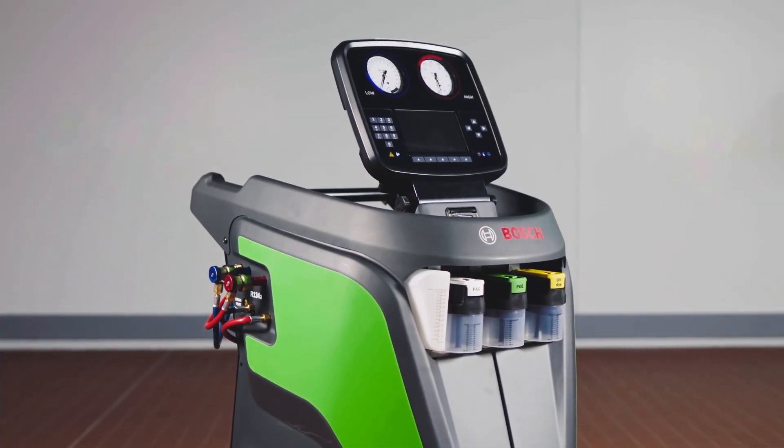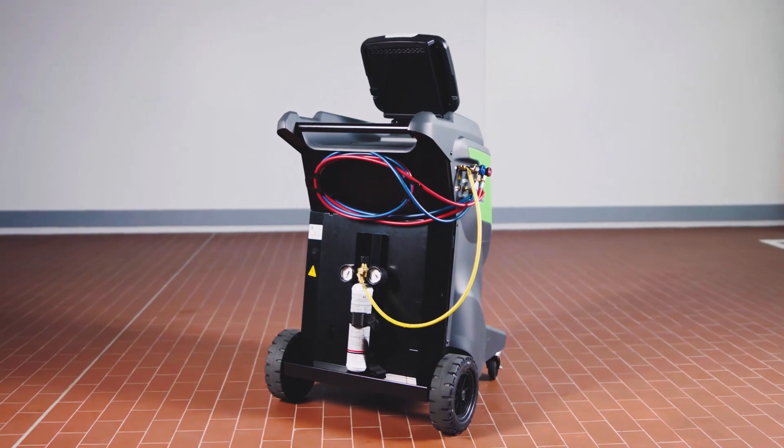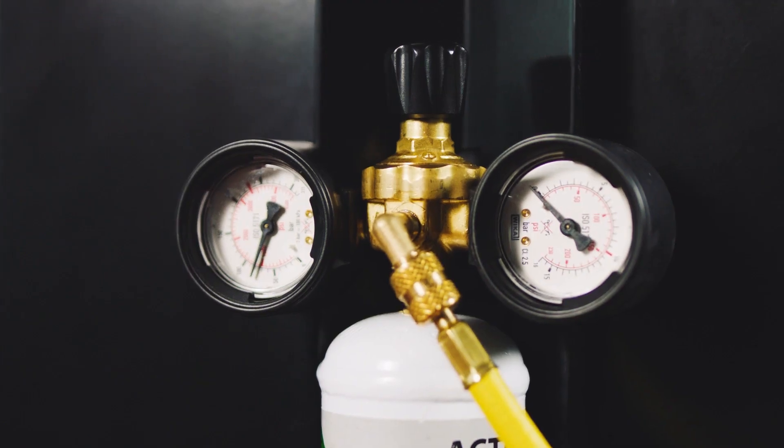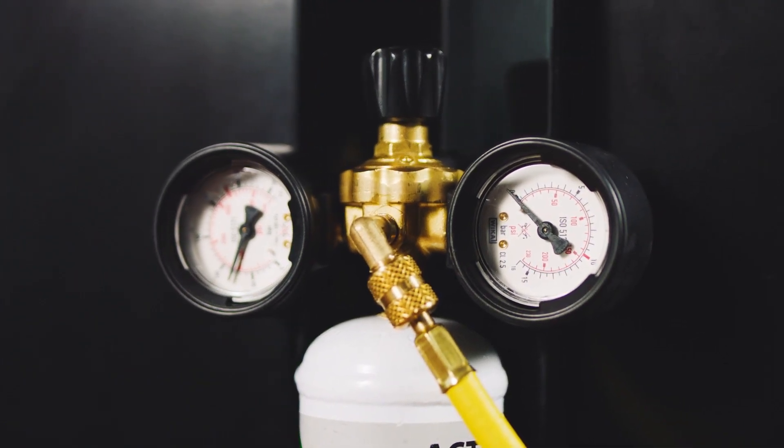As part of your Bosch ACS unit, the optional nitrogen kit efficiently helps you to find leakages in a vehicle's air conditioning system.